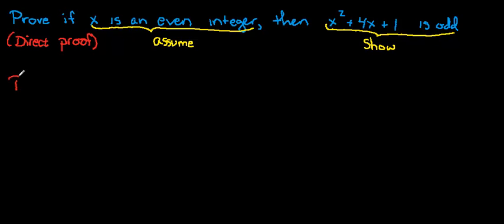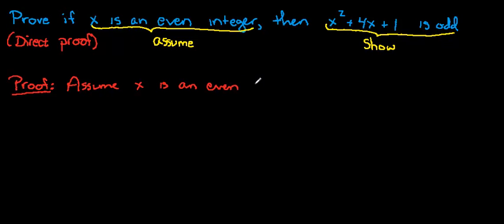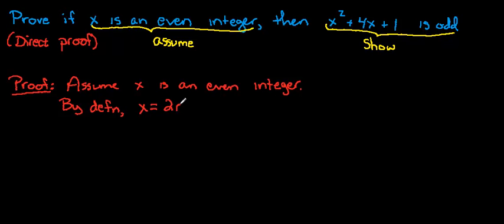So let's begin our proof. When you begin a proof, write the word 'proof.' State the assumptions — in this case, assume x is an even integer. Once we have our assumptions laid down, use those assumptions to get more information about the problem. If x is an even integer, then by definition x looks like 2 times n for some integer n. That's just the definition of an even integer.